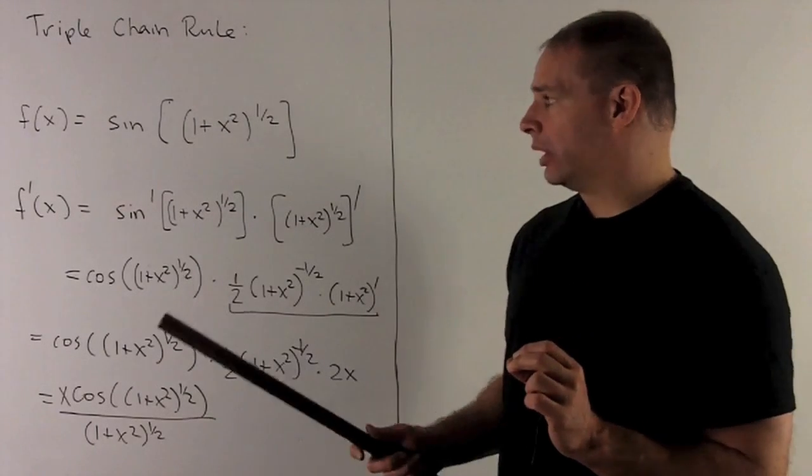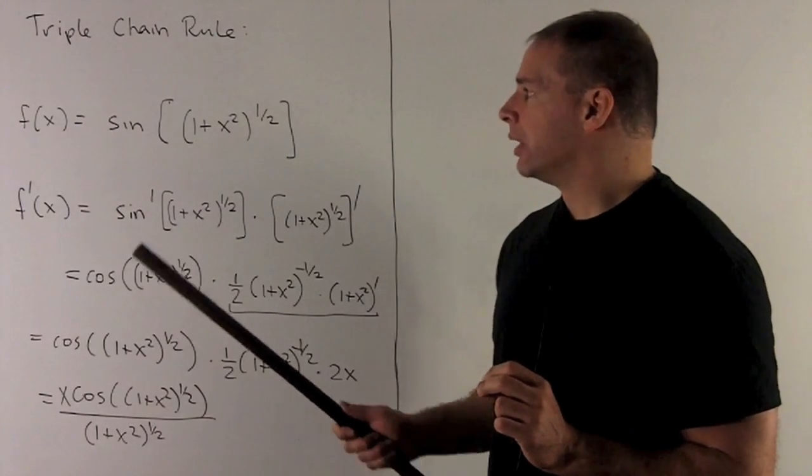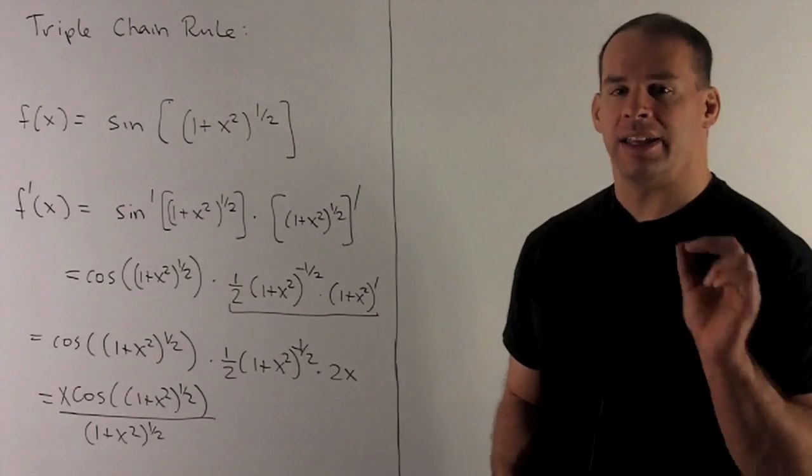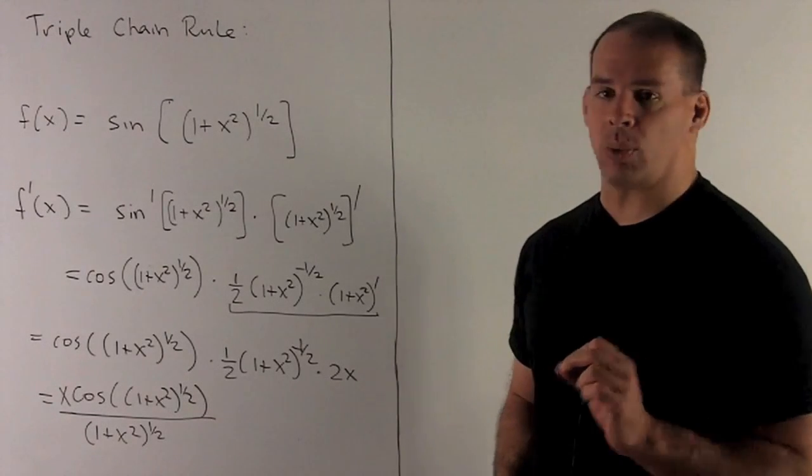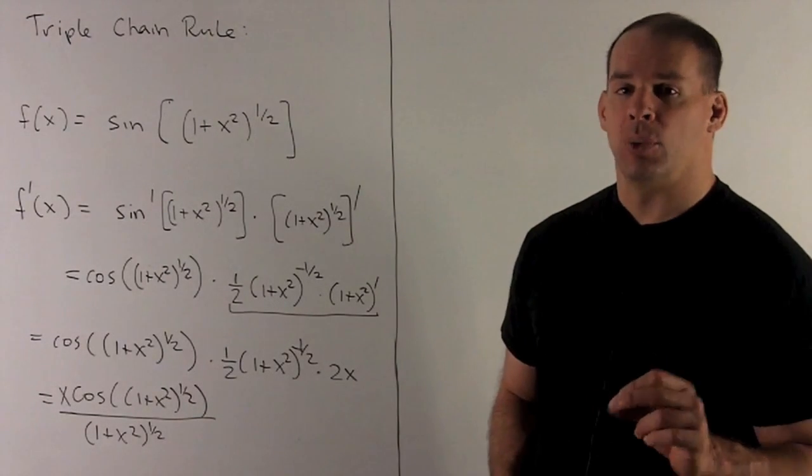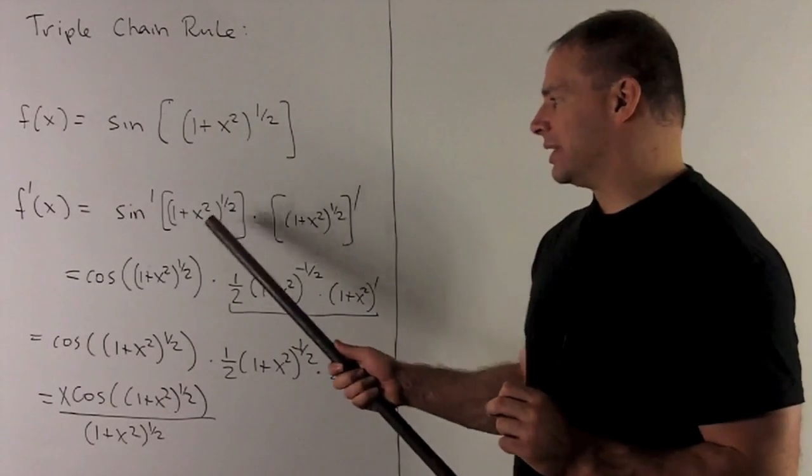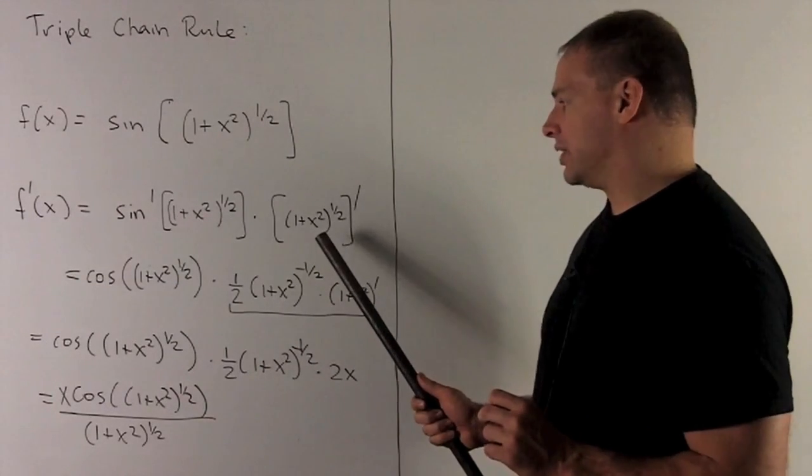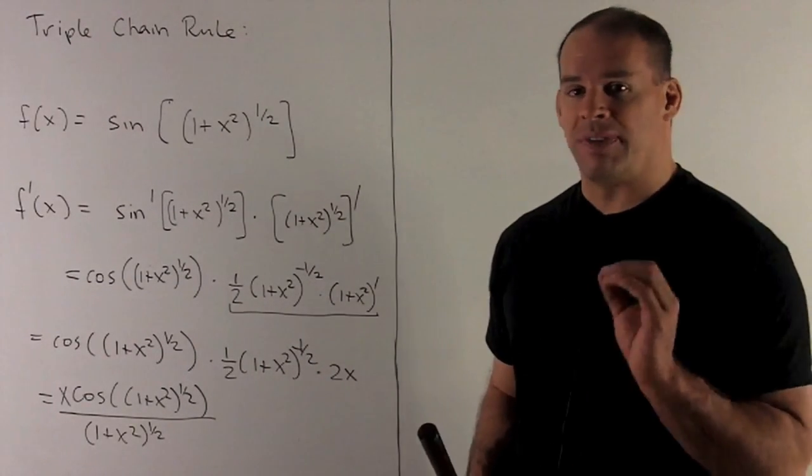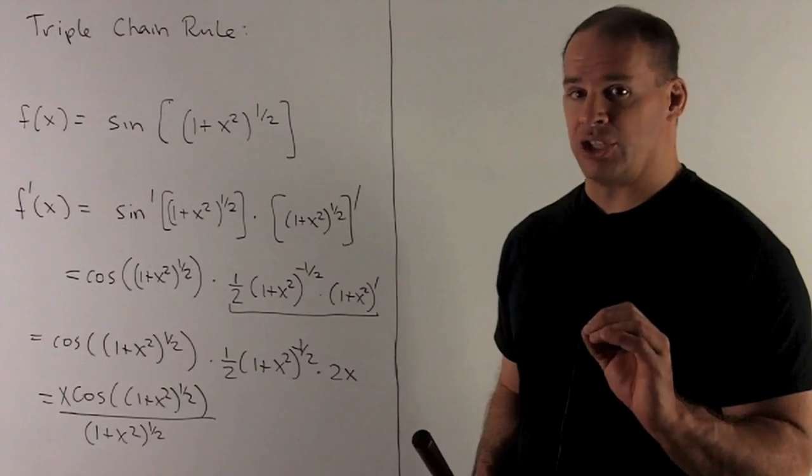So, here, what are we going to do? We're going to start off with outside function sine. Inside function is going to be 1 plus x squared to the 1 half. So, we do our derivative. It's going to be derivative of the outside, evaluate the inside, times the derivative of the inside. So, here, I'm just following straight out definition of chain rule.